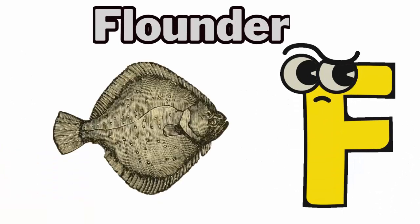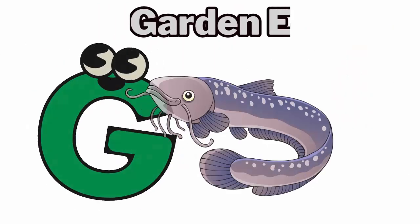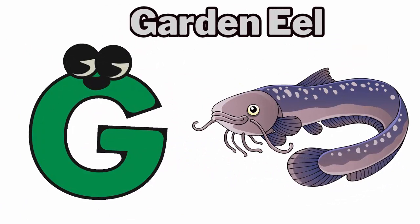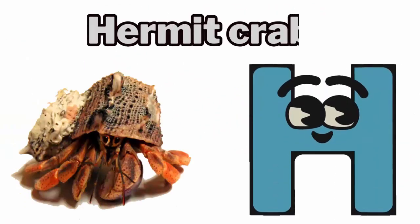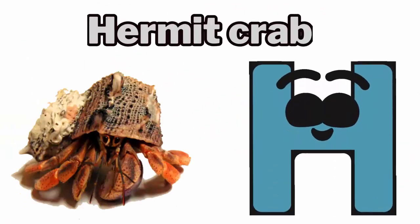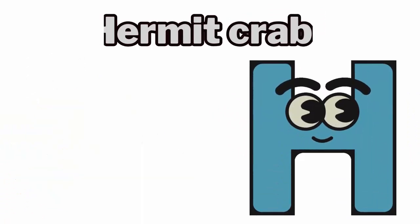F is for flounder, fuh, flounder. G is for garden eel, guh, garden eel. H is for hermit crab, ha, hermit crab.